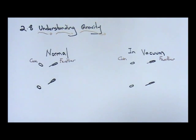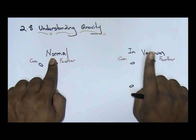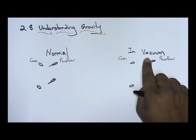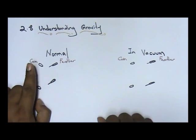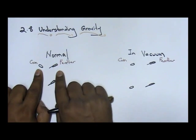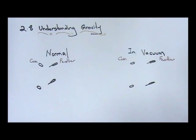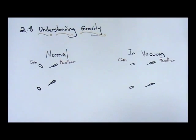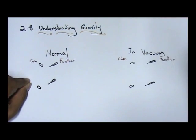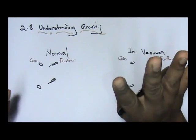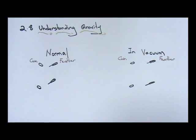There are two situations: one falling down normally and another falling down in vacuum. Falling down normally means falling in surrounding air. You have one coin and one feather. When you drop them in normal conditions, you will see that the coin falls first, and the feather takes a longer time to fall. The question is: why does the feather take a longer time to fall?